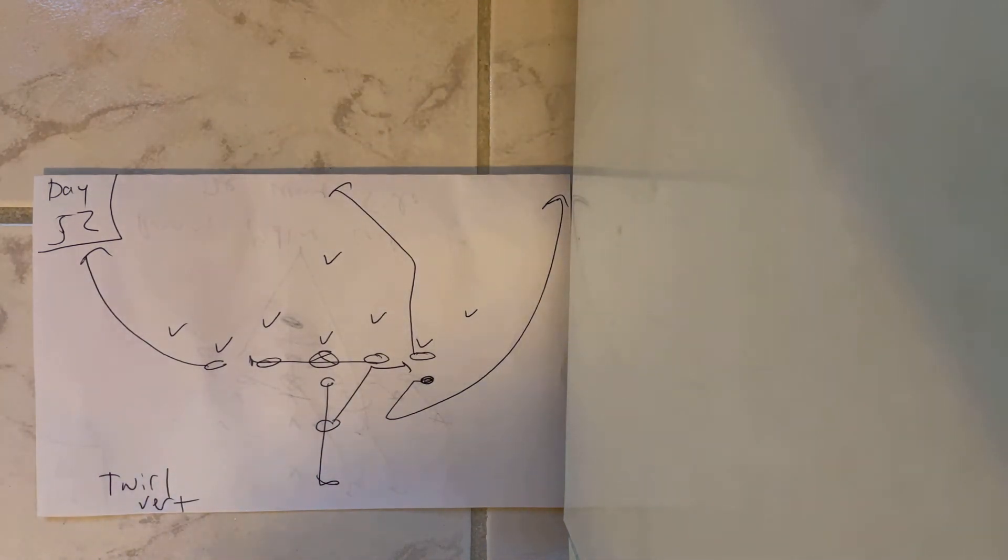So what happens here is, the quarterback's going to take a 5-step drop. The line slides away from the call. They make sure they have two steps in the ground before they throw their hands at the threat in their gap. If there is no threat, they keep sliding until there is.